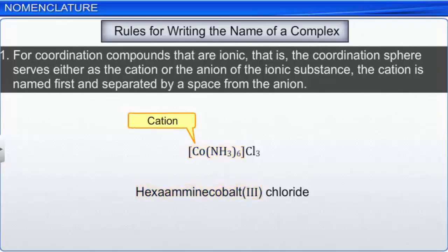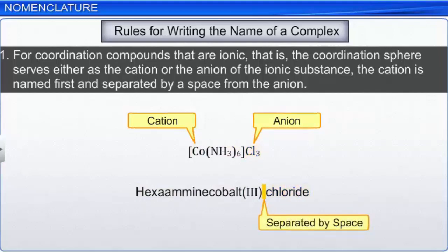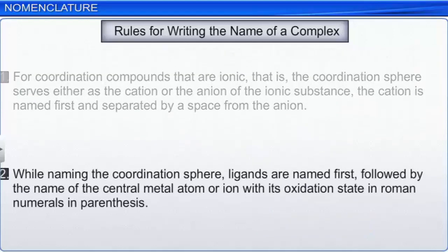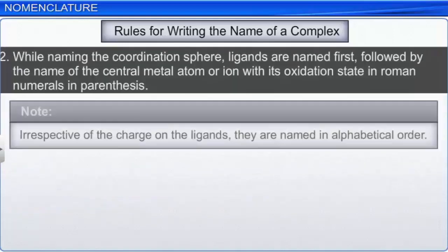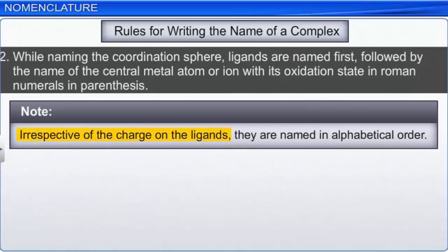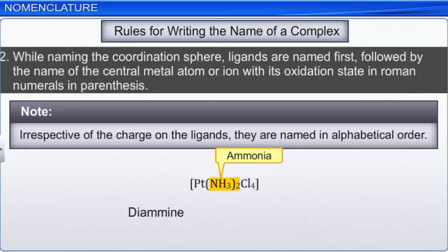While naming the coordination sphere, ligands are named first, followed by the name of the central metal atom or ion with its oxidation state in Roman numerals in parenthesis. Irrespective of the charge on the ligands, they are named in alphabetical order. For example, in [Pt(NH3)2Cl4], the ammonia ligands are named before the chloride ligands according to alphabetical order, followed by the name of the metal ion with its oxidation number. IUPAC has proposed certain rules for naming ligands: anionic ligands are given names that end in the letter 'o'.